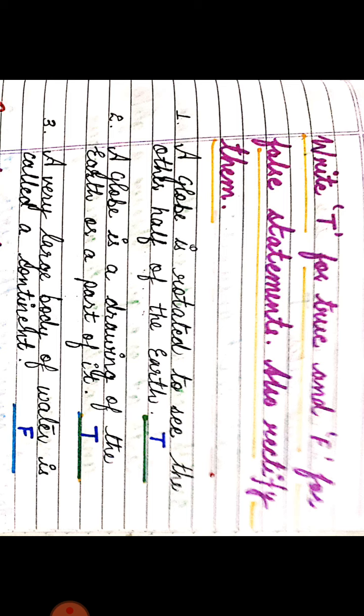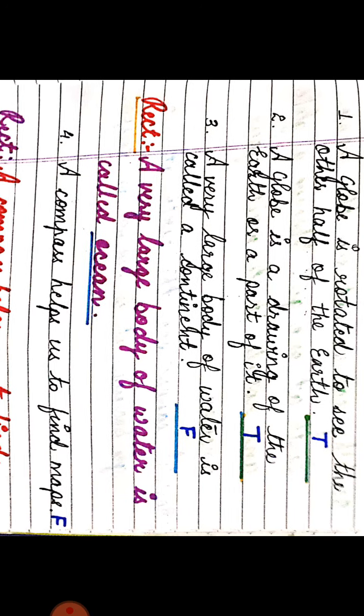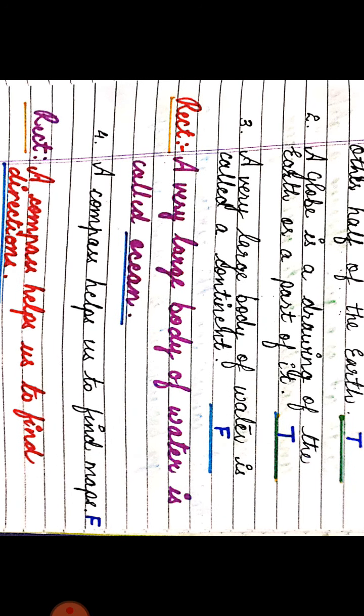The next statement: a globe is the drawing of the earth, or a part of it. The statement is correct, so we will put T. Next: a very large body of water is called a continent — is this true or false? It is false. We will rectify it: a very large body of water is called an ocean.